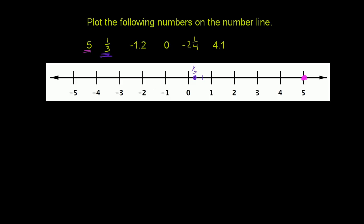Then we have negative 1.2. I'll do that in this blue color. Negative 1.2. So negative 1 is right over here. This is more negative than negative 1. It's negative 1.2. It's negative 1 and then another 0.2. So it's going to be right over here. So this is negative 1.2.